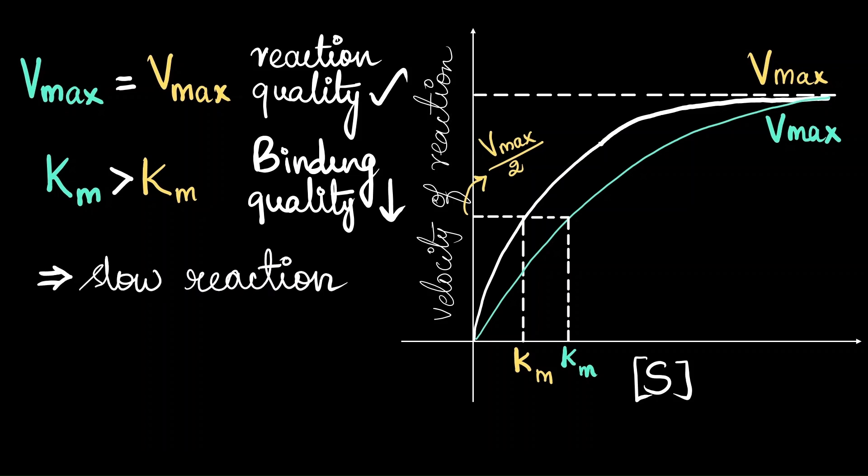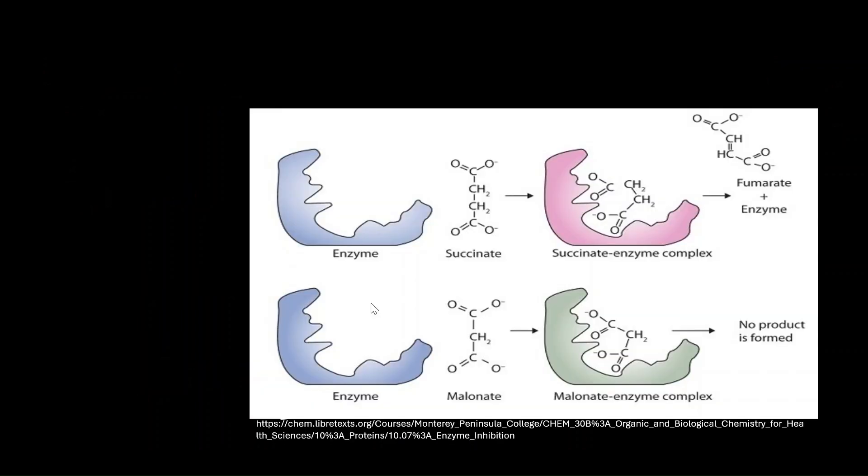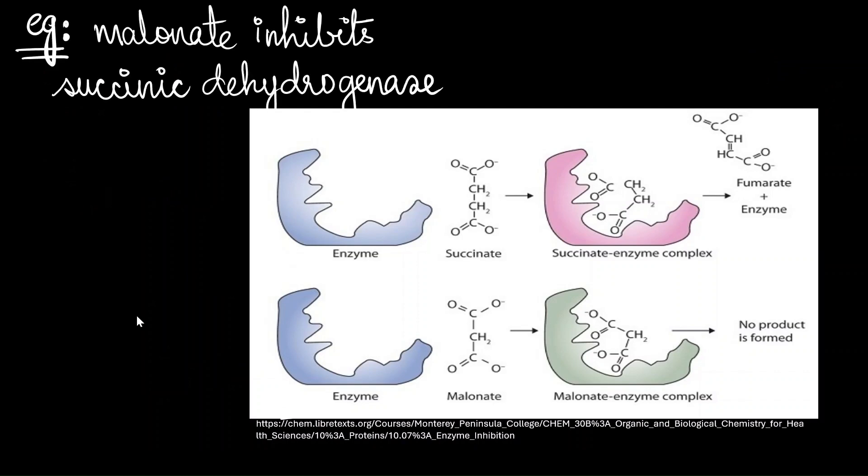What happens is when the inhibitor binds to the enzyme, it slows down the rate of reaction. But competitive inhibitions are usually reversible. How do we do that? If we increase the concentration of substrate with respect to inhibitor, it would reverse the reaction. An example of this sort of competitive inhibition is when the enzyme succinic dehydrogenase is inhibited by the molecule malonate.